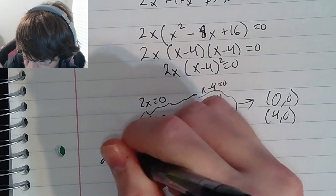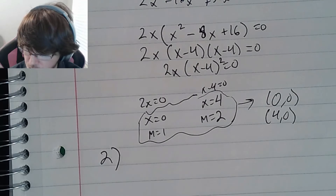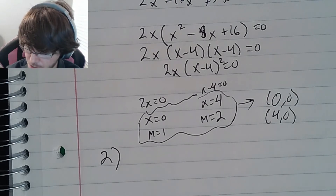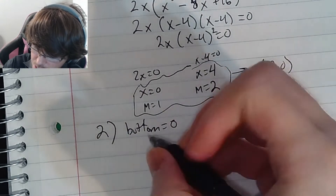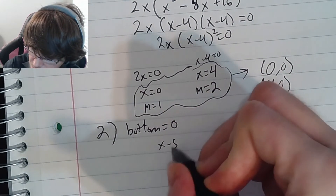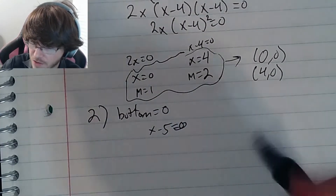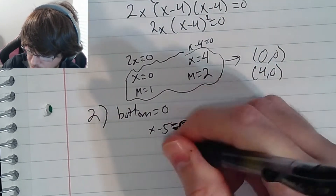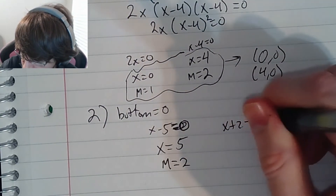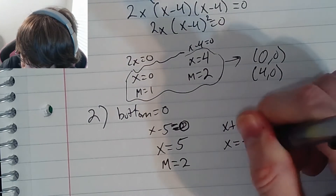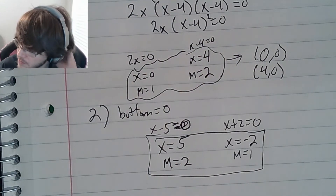Step two: find the vertical asymptotes by setting the denominator equal to zero. We have (x - 5)² and (x + 2) as factors of the denominator. Setting x - 5 = 0 gives x = 5 with multiplicity 2. Setting x + 2 = 0 gives x = -2 with multiplicity 1. These are our vertical asymptotes.